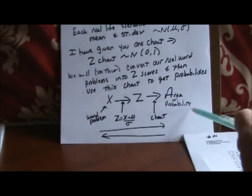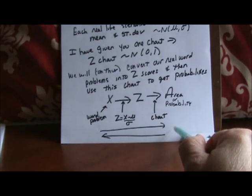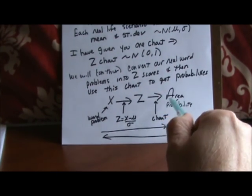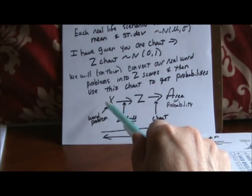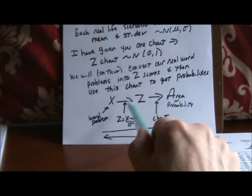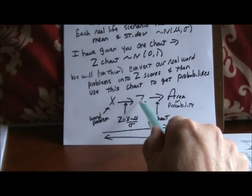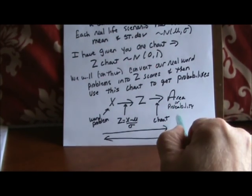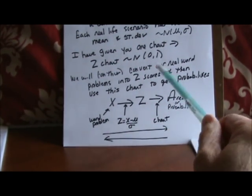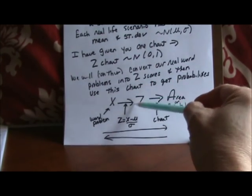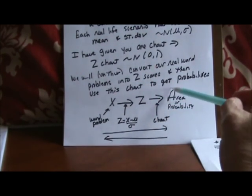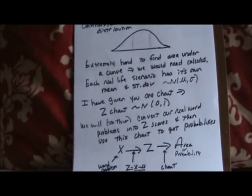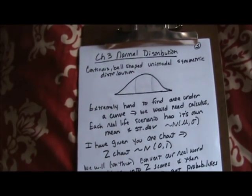We can go forwards through this process or completely backwards. It's important to understand you can't go straight from a word problem to getting an area — you have to go through the z first. These are always two-step problems. The rest of this video is going to focus on how to go from z to area and from area back to z.